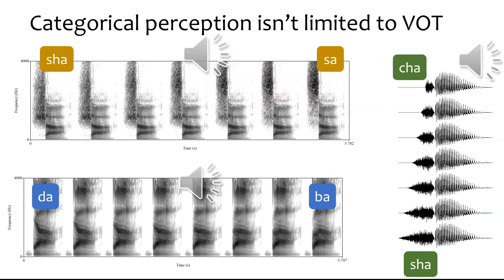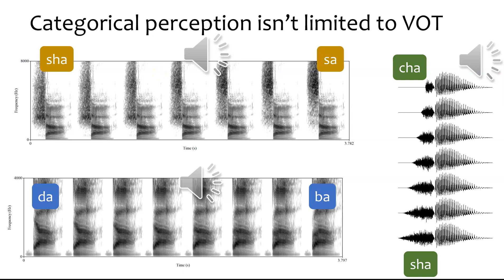VOT is not the only speech cue that is perceived categorically. For example, if we have a continuum between SHA and SA, at some point along that continuum you probably changed from hearing SHA to hearing SA in a very discrete jump. We can also change between hearing DA to BA — again, your perception probably took a discrete jump somewhere in the middle of that continuum.